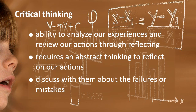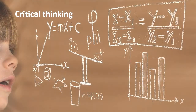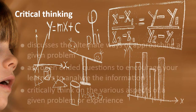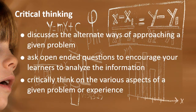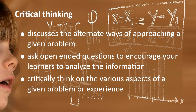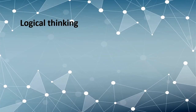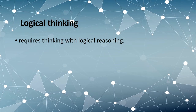For critical thinking, a person requires abstract thinking to reflect on actions and discusses with others about failures or mistakes, and discusses alternative ways of approaching a given problem. As a teacher, you should ask open-ended questions to encourage your learners to analyze the information. Give them opportunity to critically think on various aspects of a given problem or experience. If they use abstract thinking and analyze experiences and actions by reflection, they will definitely develop critical thinking.